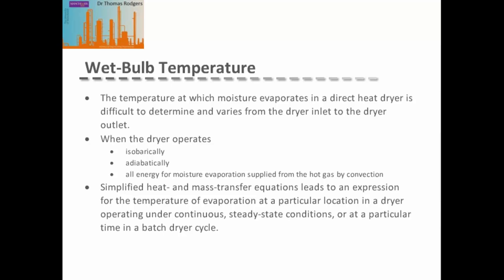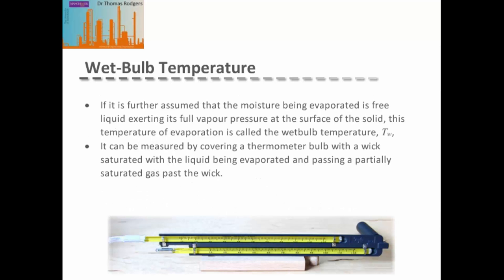The temperature at which moisture evaporates in a directly heated dryer is difficult to determine and varies from inlet to outlet. If the dryer operates isobarically and adiabatically, with all evaporation energy supplied by convection from the hot gas, simplified heat and mass transfer equations can be generated for continuous steady-state or batch conditions. If the moisture being evaporated is free liquid exerting its full vapor pressure at the solid surface, this temperature equals the wet bulb temperature.